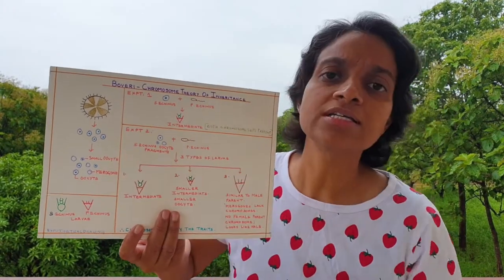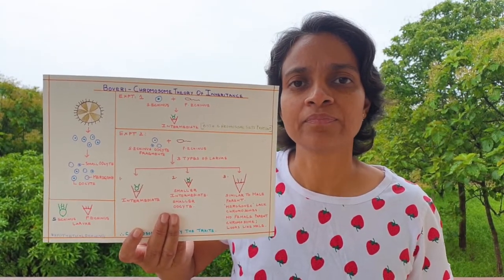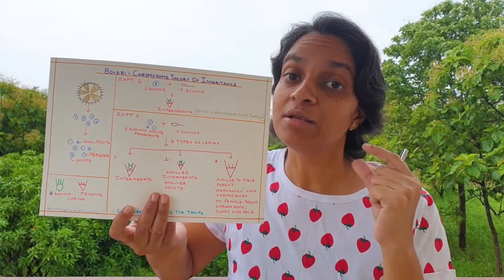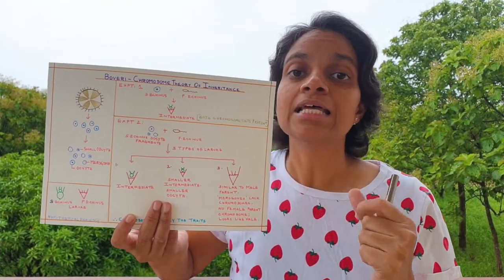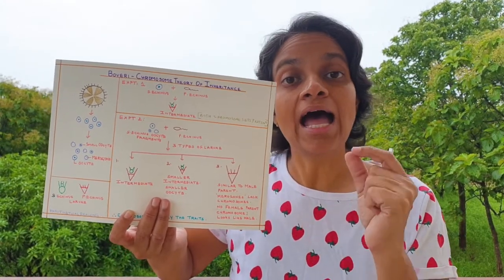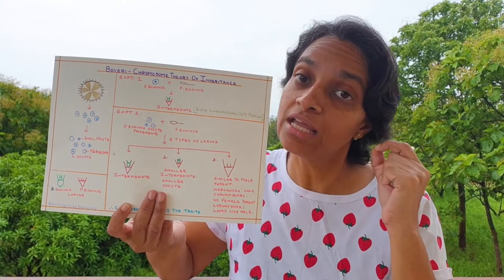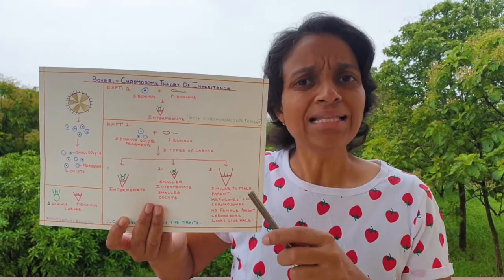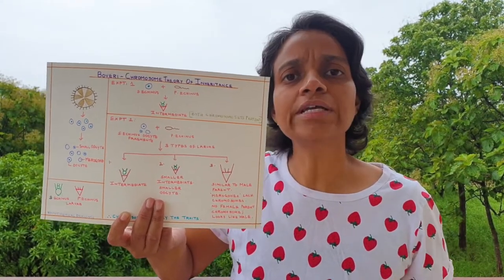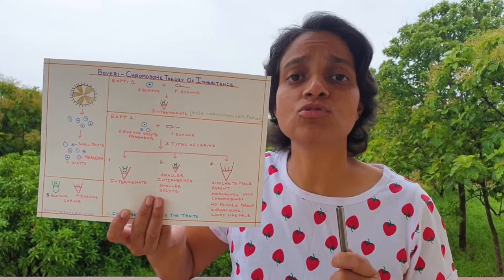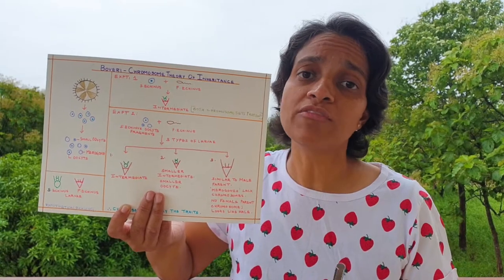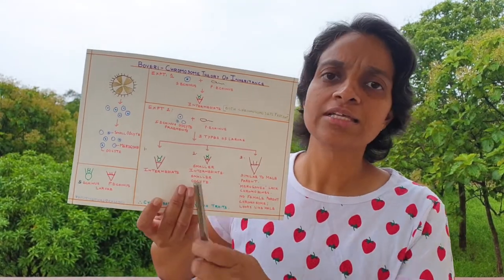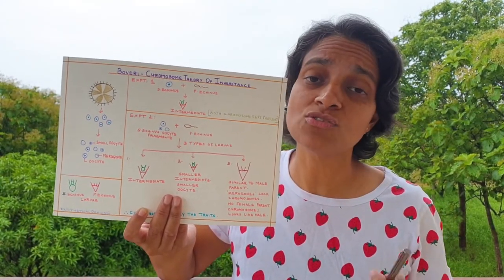Boveri took sea urchin as his model organism. Boveri was the first to propose that chromosome number is reduced to half in mature oocytes, and that sperm and egg have equal quantities of hereditary information or equal quantities of chromosomes. By the time Boveri did this experiment, it was already known that sperm nuclei fuse with the egg nuclei during fertilization. Sea urchin was taken as a model because sea urchin oocytes are transparent and all the stages of development can be observed.